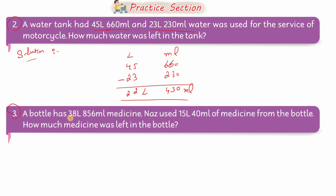Question number 3: A bottle has 38 liters 856 ml of medicine. Naaz used 15 liters 40 ml of medicine from the bottle. How much medicine was left in the bottle? بقایا آپ نے بتانا ہے — تو total quantity لکھ لیں گے۔